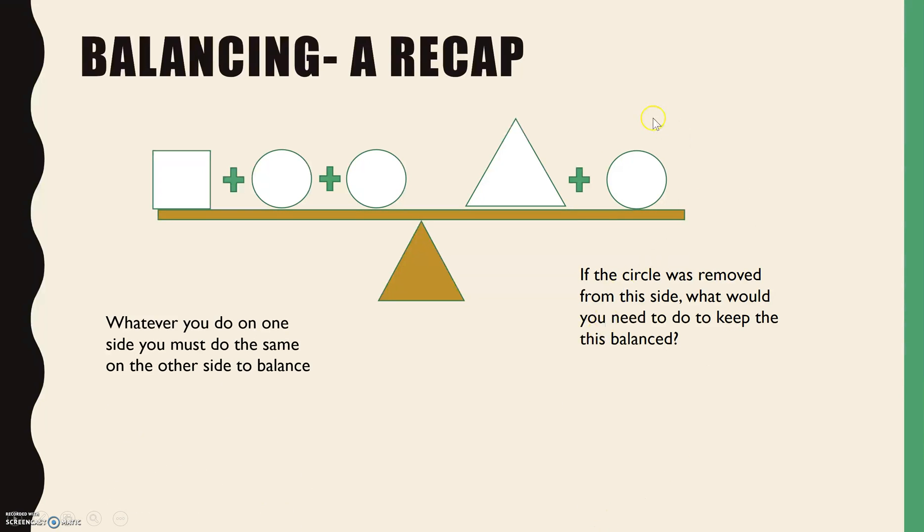The key thing you have to remember is whatever you do on one side, you have to do to the other side, and that's how you'll keep it balanced. So for this side, we said we want to remove this circle. We've got a plus circle, so to get rid of it we do the opposite: minus circle. We have to do that on both sides to keep it balanced.